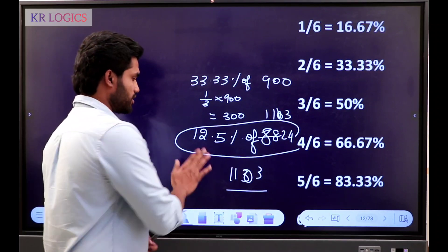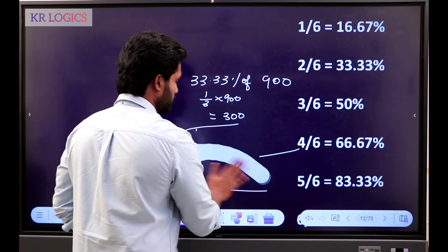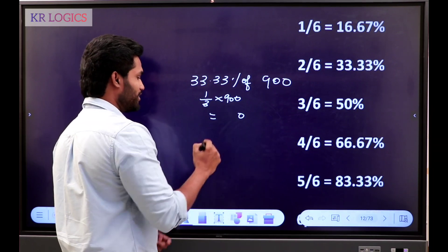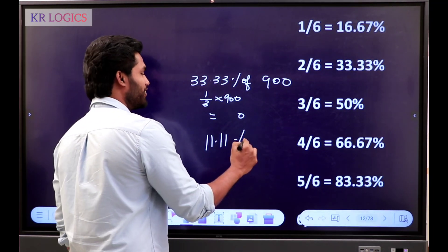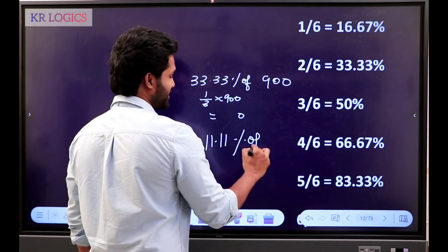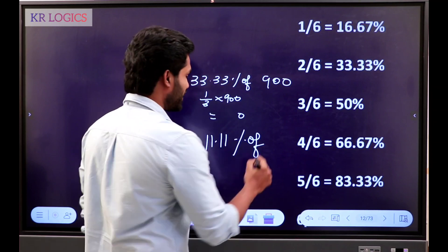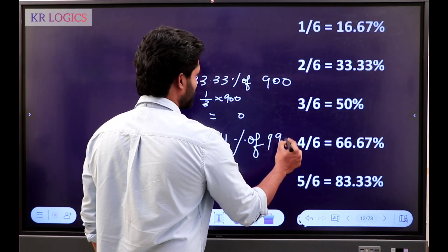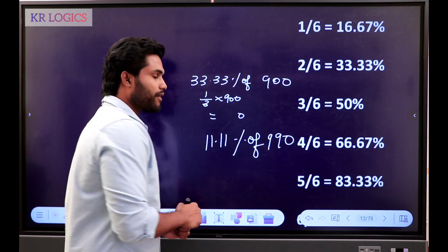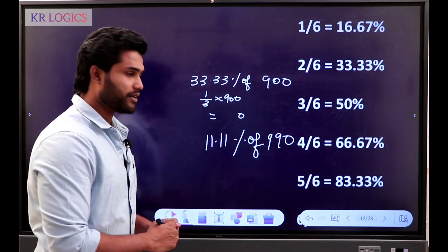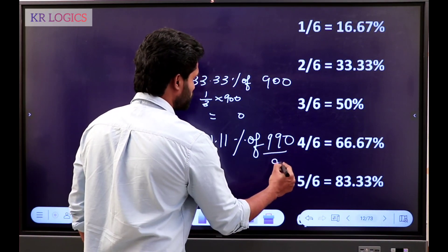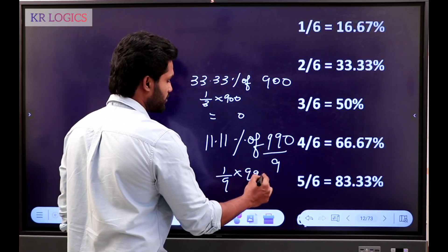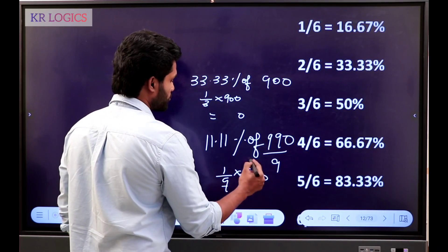Can you solve it? What is it? 11.111 percentage of 990. If it's 99, it's 1 by 9 — so it's 11.11. 1 by 9 of 990. Answer is 990 divided by 9. So, what is 110.